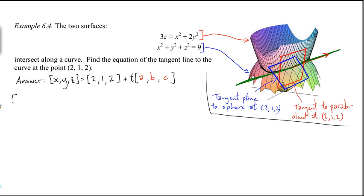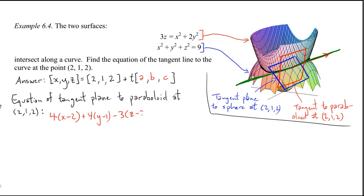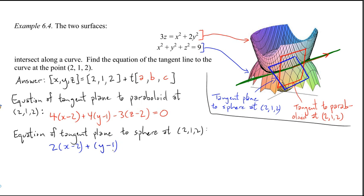Now, let's recall, let's write down the equation of the tangent plane to the paraboloid at the point 2, 1, 2. Looks like this: 4(x-2) + 4(y-1) - 3(z-2) = 0. Let's also write down the tangent plane to the sphere at 2, 1, 2. There it is: 2(x-2) + (y-1) + 2(z-2) = 0.